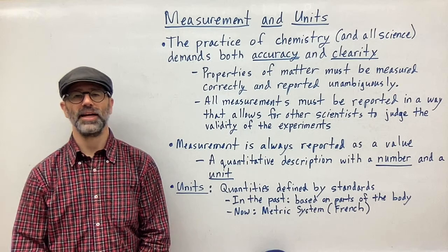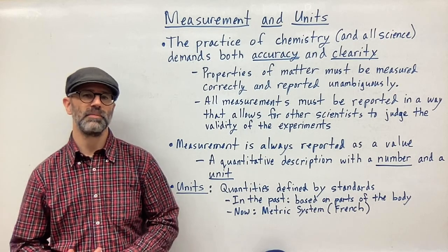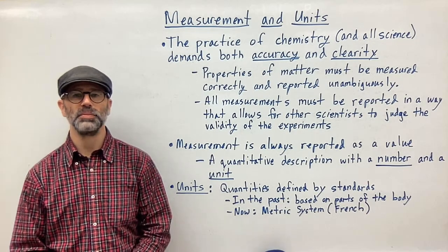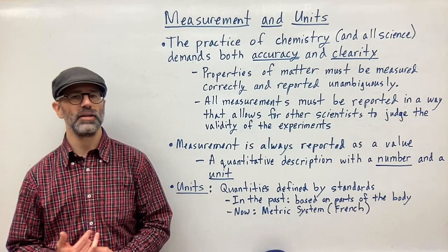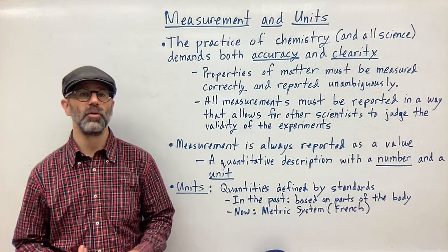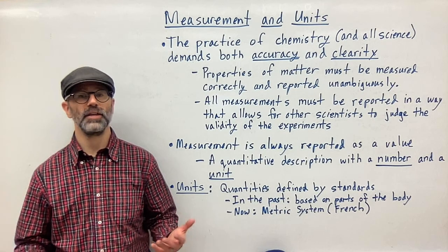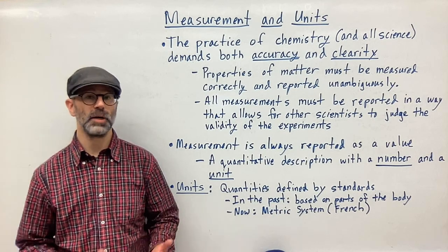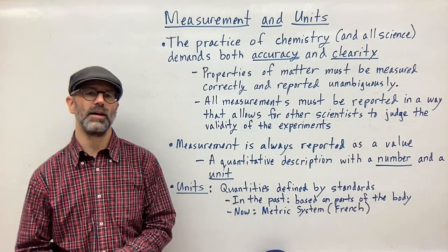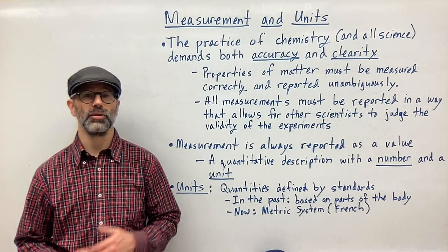The practice of chemistry and all science demands both accuracy and clarity. Properties of matter, which is studied by chemistry, must be measured correctly and reported unambiguously. Therefore, all measurements must be reported in a way that allows other scientists to judge the validity of the experiments. In other words, if we're not speaking the same language, we're not going to be able to communicate and science is not going to progress.